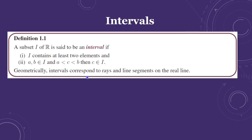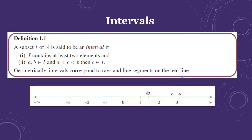Geometrically, intervals correspond to rays, line segments, or lines on the real number line. For example, between 1 and 2 on the number line we have the value root 2, which is approximately 1.414. That value lies between 1 and 2 — these are called intervals.